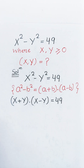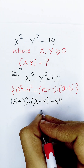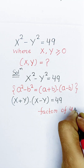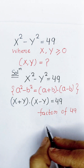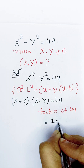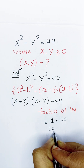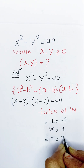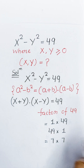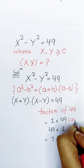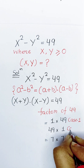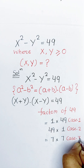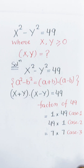Now let's find the possible factors of 49. The factors of 49 are 1 into 49, 49 into 1, and 7 into 7. That means we have three cases: Case 1, Case 2, and Case 3. We will solve the question using these cases.